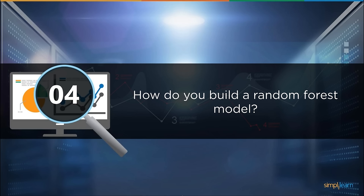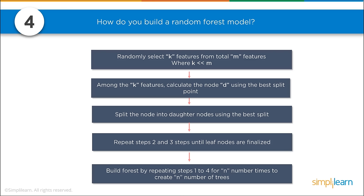If you have a decision tree, you should also understand how to build a random forest model — a random forest is built up of a number of decision trees. To build one: randomly select K features from a total of M features where K is less than M. Among the K features, calculate the node D using the best split point. Split the node into daughter nodes using the best split. Repeat until leaf nodes are finalized. Build the forest by repeating these steps N number of times to create N trees. Random forest has a vote at the end — whoever gets the most votes wins.